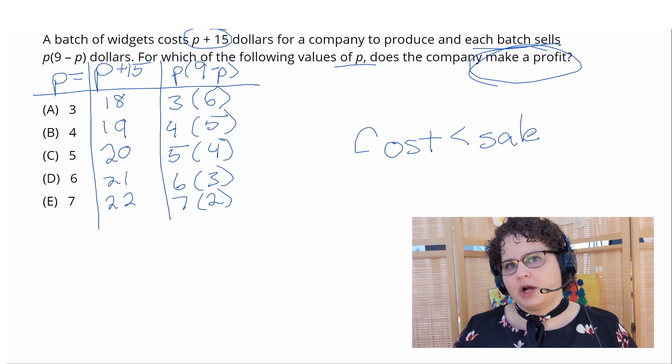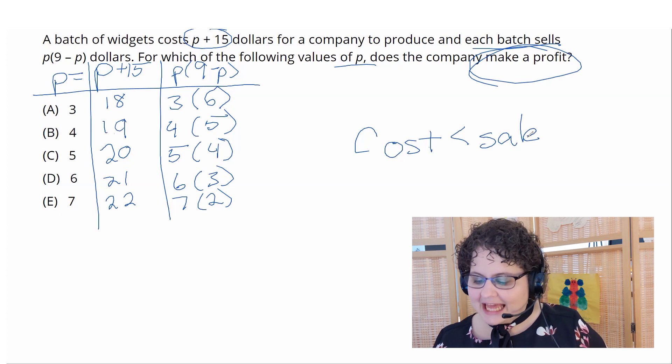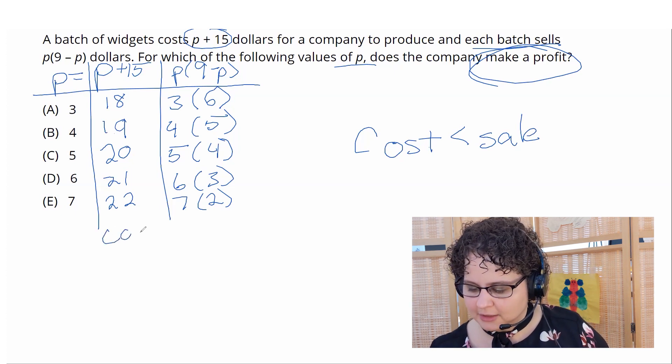And now take a look at what the two columns we've created mean. P plus 15 in the text, it says that that is the cost. So here I have a column of costs.